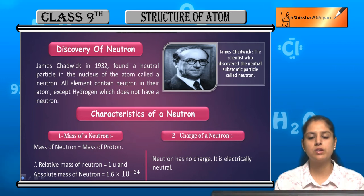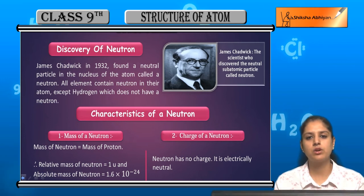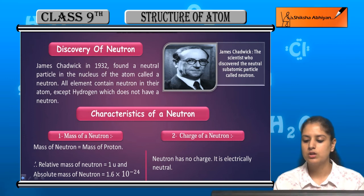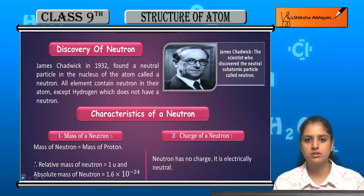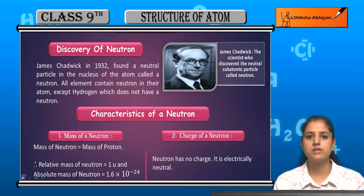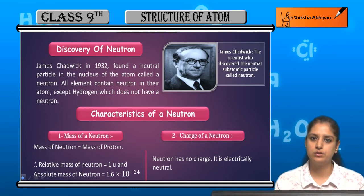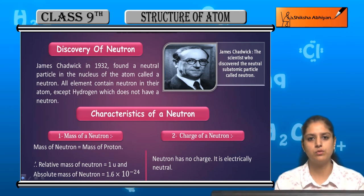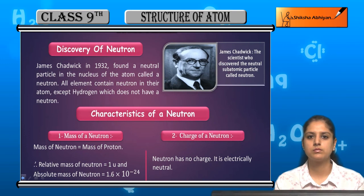The charge of neutron — if we talk about the charge of neutron, the charge of neutron is 0, that means it is electrically neutral. It does not have any charge. The charge is 0 and it is electrically neutral. This was all about the discovery of neutron and characteristics of neutron.